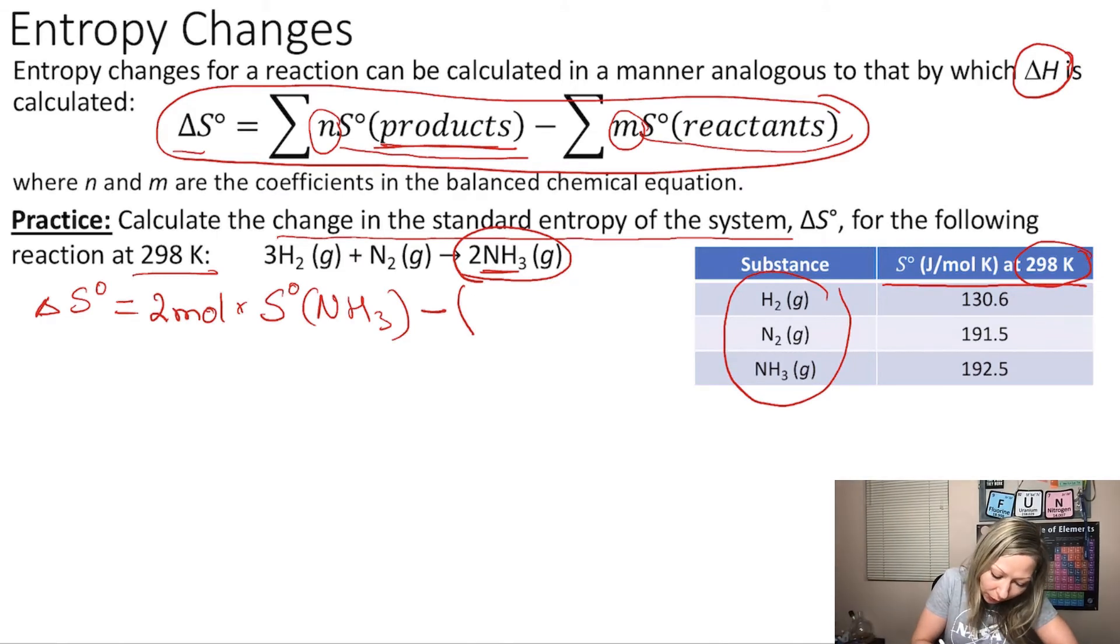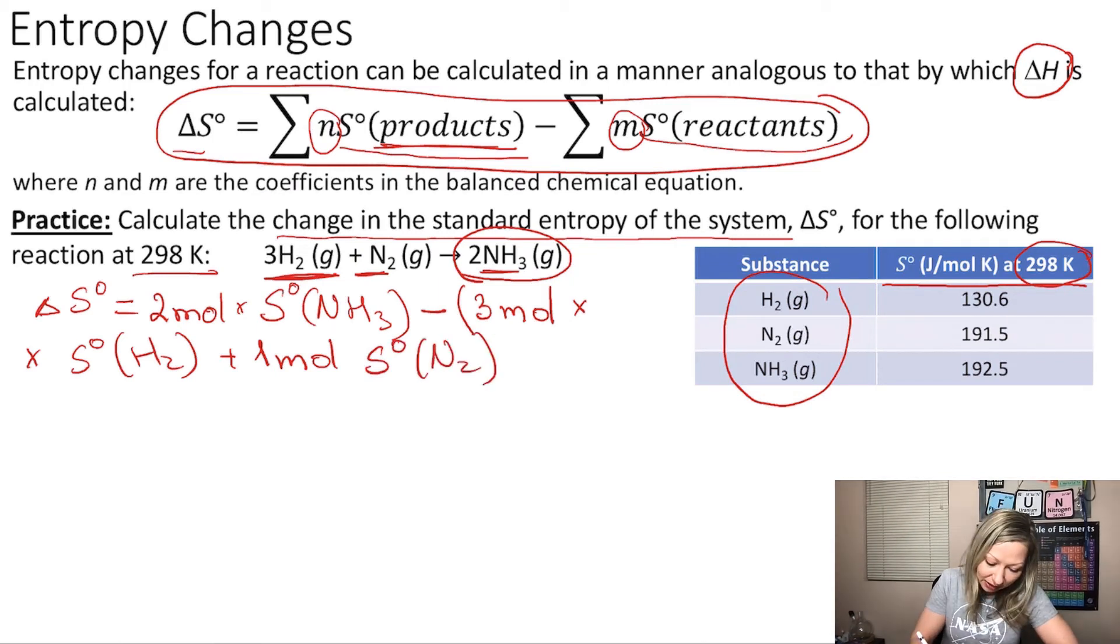So our first reactant is hydrogen. So 3 moles multiplied by the standard entropy for H2 gas plus 1 mole of N2. So standard entropy for N2 gas. And that's it! Let's add some brackets to make it a little bit nicer.